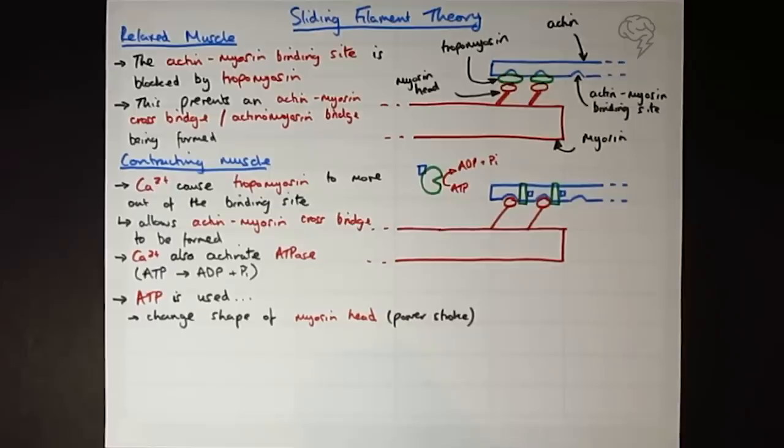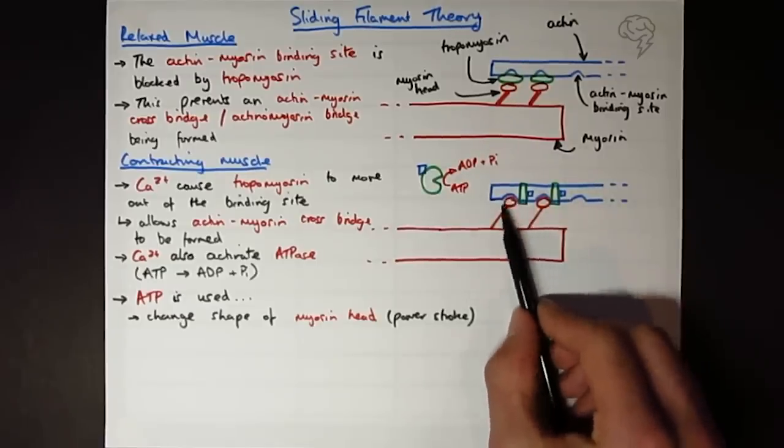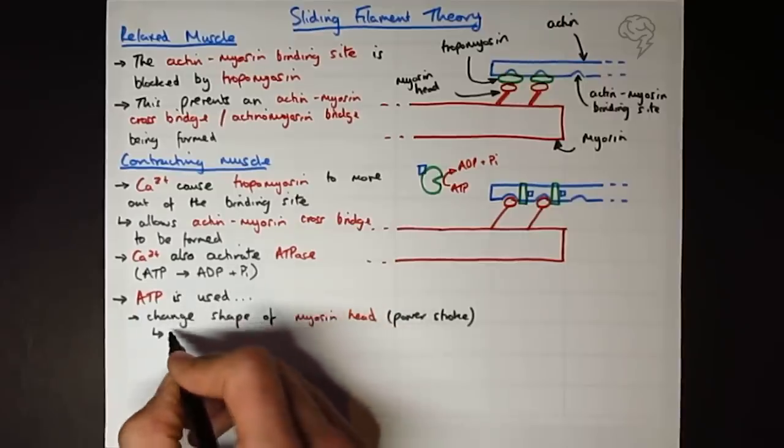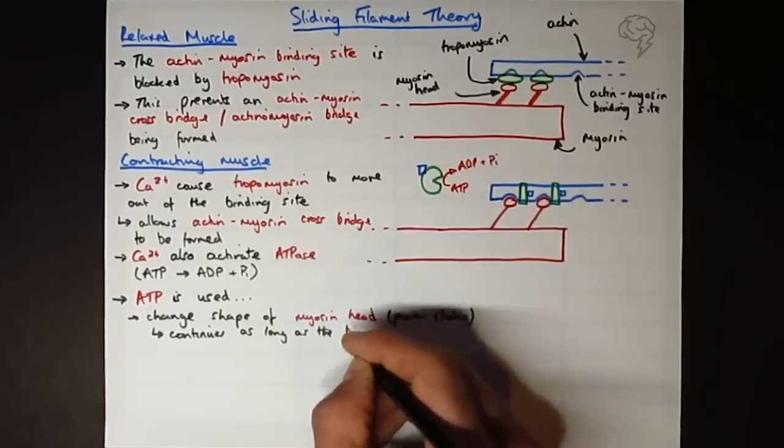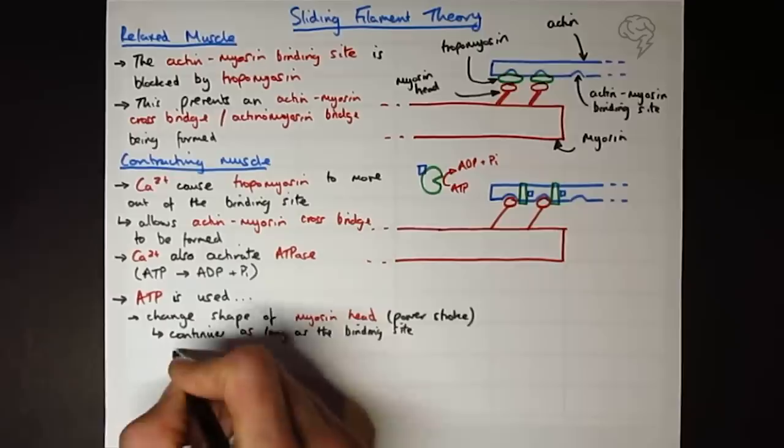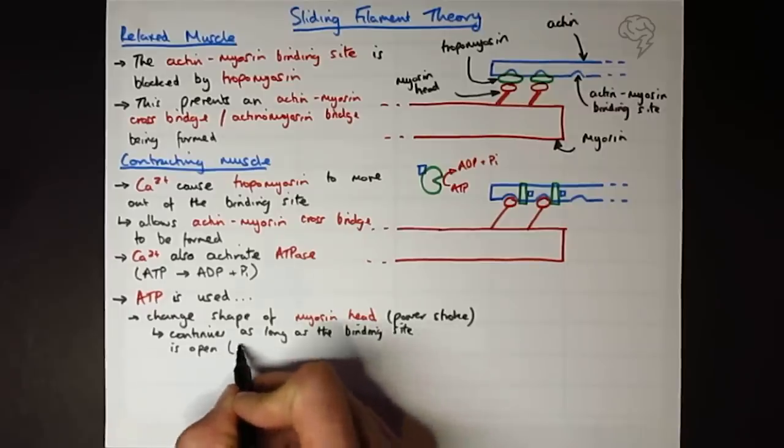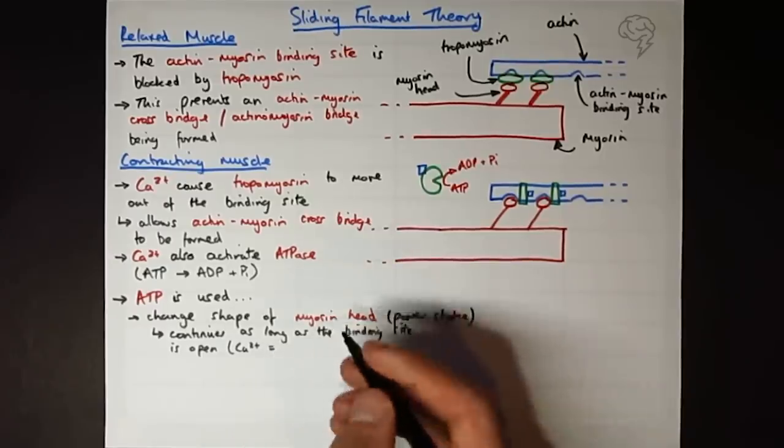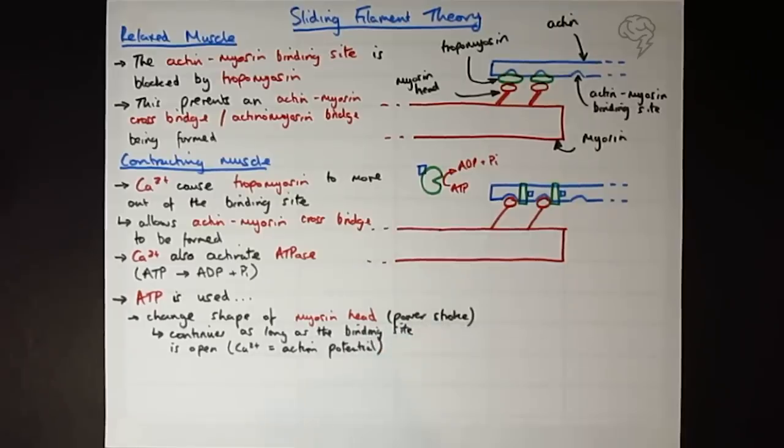I'm going to just elaborate on the power stroke a little bit. It's a ratchet mechanism that continues as long as we've got calcium ions here. Then as long as the actin and myosin crossbridge can form, as long as the binding site is open, then this is going to continue. And when is the binding site open? When there's calcium ions bound to the troponin. And what releases the calcium ions? In the first place, it's the action potential arriving at the neuromuscular junction.